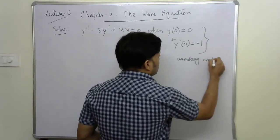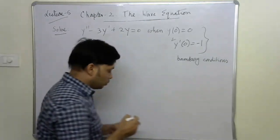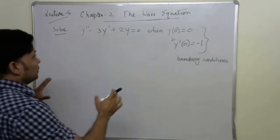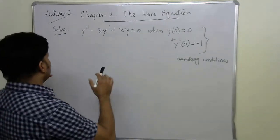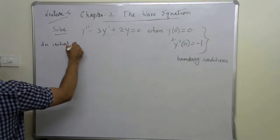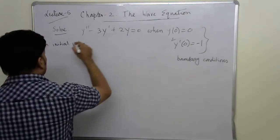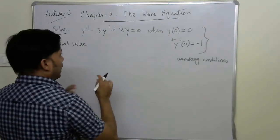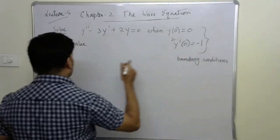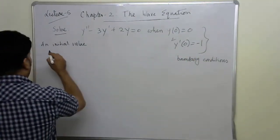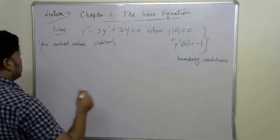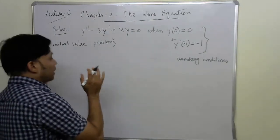Boundary conditions have a very important role to play in quantum mechanics, which we will come to later. This type of problem is also known as an initial value problem, because the given conditions specify values at x = 0 — the initial values.